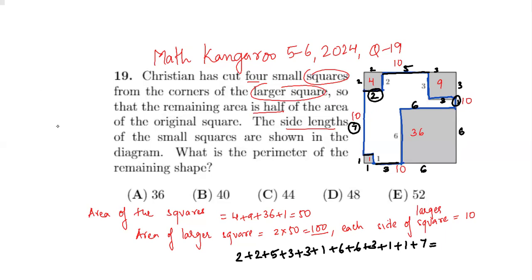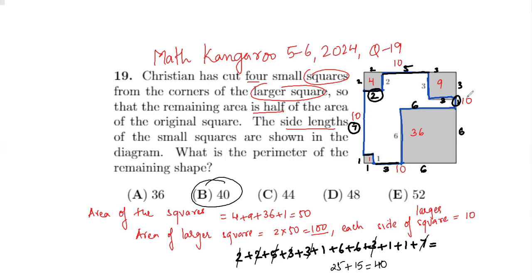When adding these up, always look for numbers that add to 10. So: 7 + 3 = 10, then 3 + 2 = 5, and 3 + 2 = 5, giving 10 + 5 + 5 = 20... working through it all gives 40. The perimeter of the remaining shape is 40, so the answer is B. Thank you for watching — subscribe to my channel for more such videos!